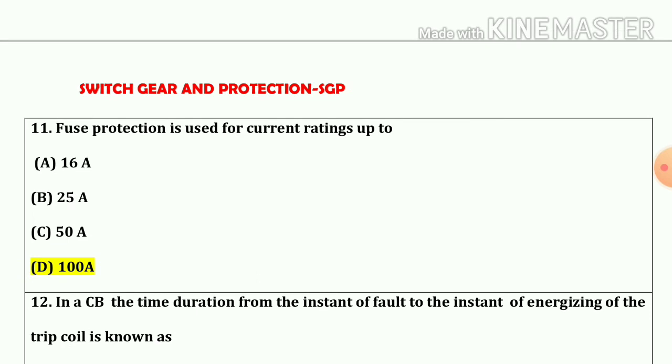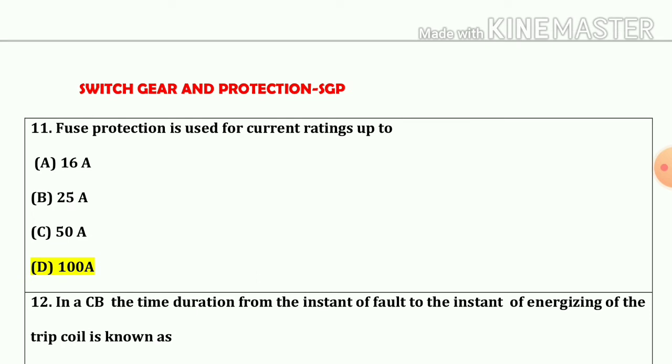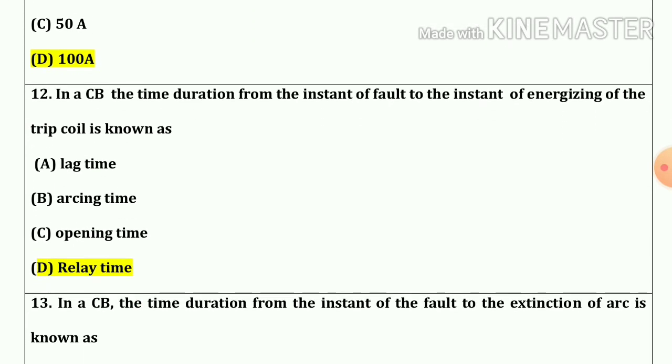Question number 11. Fuse protection is used for current rating up to 100 ampere. Question number 12. In a circuit breaker the time duration from the instant of fault to the instant of energizing of the trip coil is known as relay time. This one is important question.